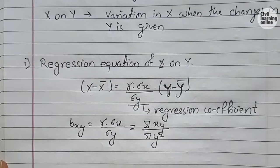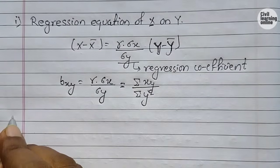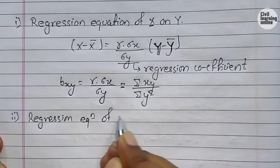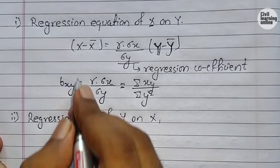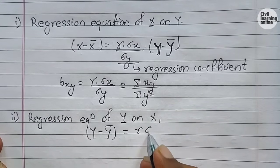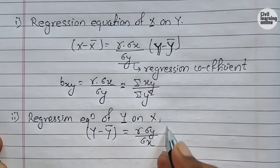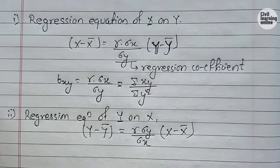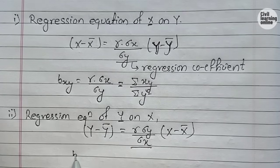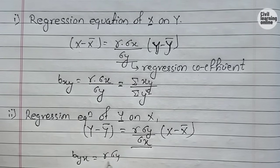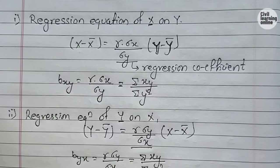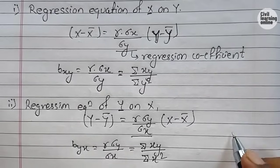Similarly, now time for the regression equation of y on x. The equation is: y minus ȳ equals r times (summation y / summation x) times (x minus x̄). Here again, this is the regression coefficient of y on x, so we write byx equals r times (summation y / summation x), which is also given as summation xy divided by summation x squared.